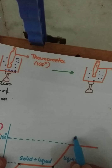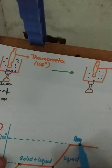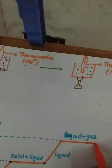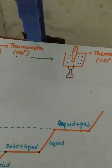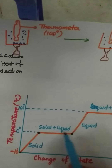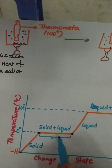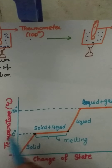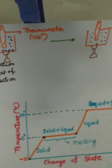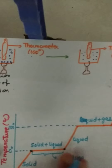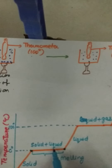Finally, when all the liquid has converted to gas, the temperature increases again and this is the gaseous state. So this is how we can explain the change of state. From solid to liquid, the process is called melting. The heat supplied during melting — where temperature is not visibly changing — goes into separating the particles, and that is called the latent heat of fusion.